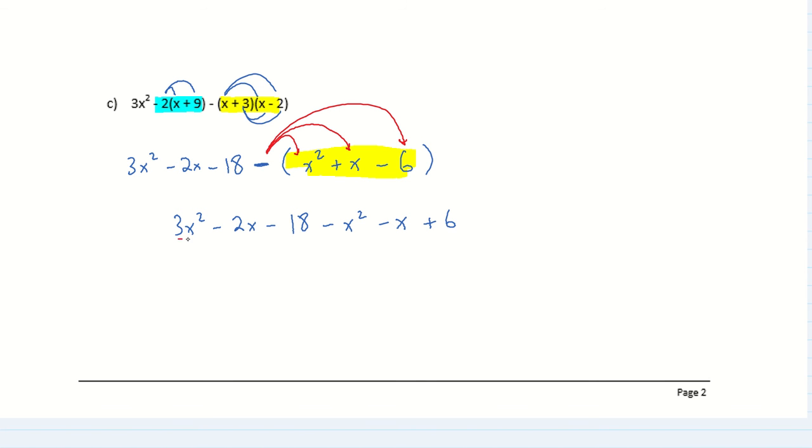All right, so now gathering like terms, we have 3x squared and minus 1x squared combines to 2x squared. Then I have negative 2x and negative x, and that combines to negative 3x. And then the last ones are negative 18 and positive 6 give me negative 12. Simplified, cleaned up, and ready to go.